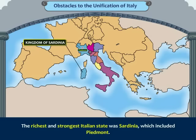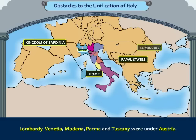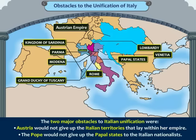The richest and strongest Italian state was Sardinia, which included Piedmont. The papal states, comprising Rome and Italy, belonged to the Pope. Lombardy, Venetia, Modena, Parma and Tuscany were under Austria.